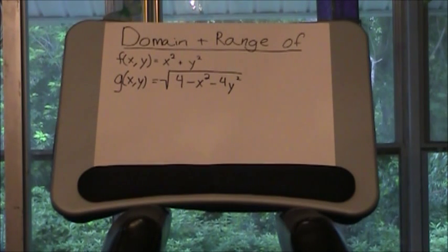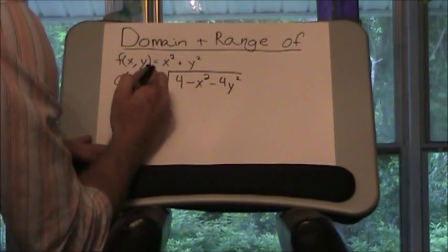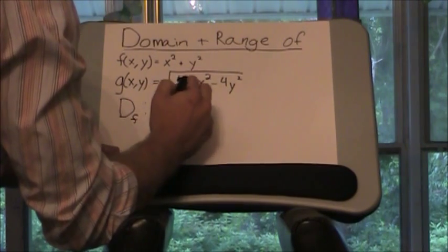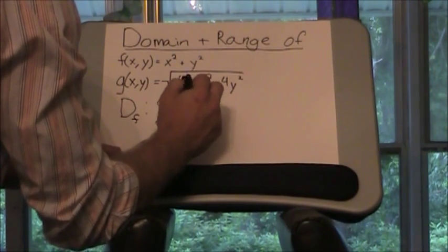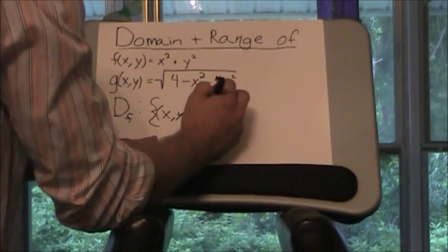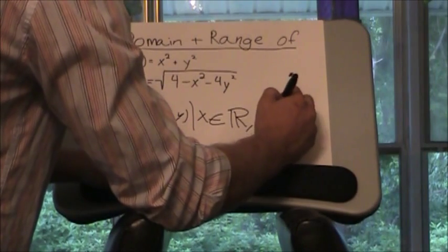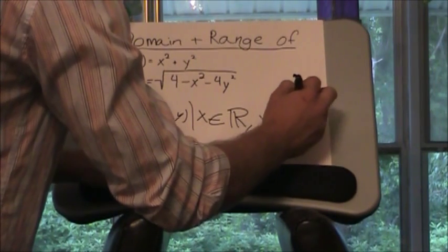So in this first function, f of x, y equals x squared plus y squared, there's nothing that makes that undefined at any point. You can plug in any real number into x or y and you will get a real answer and that will be fine. So the domain of f is x, y such that x is an element of the real numbers and y is also an element of the real numbers.